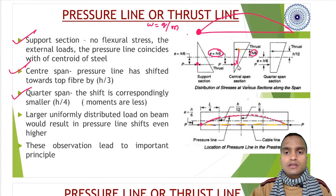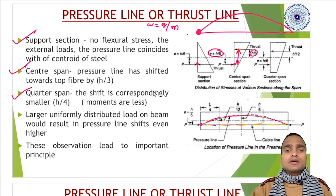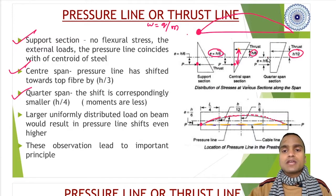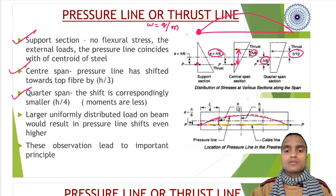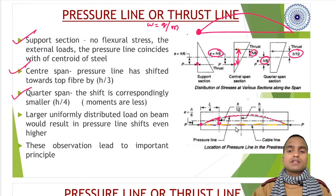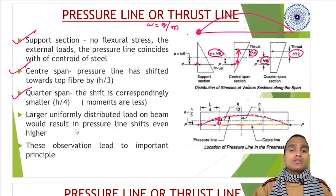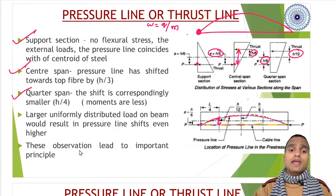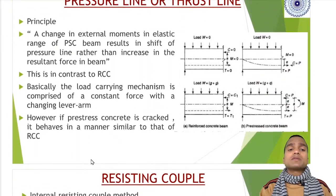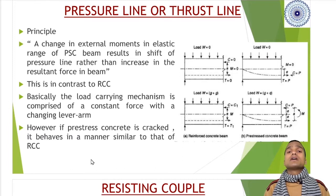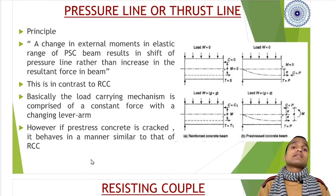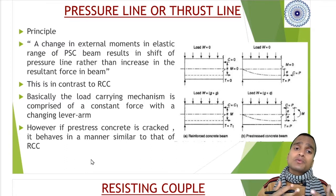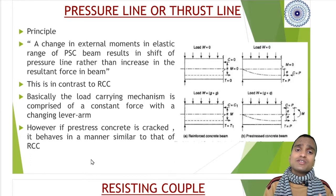At quarter span, the shift is correspondingly smaller - h by 12 and h by 6. We can conclude that larger uniformly distributed load on the beam would result in pressure line shifts even higher. These observations lead to important principles.